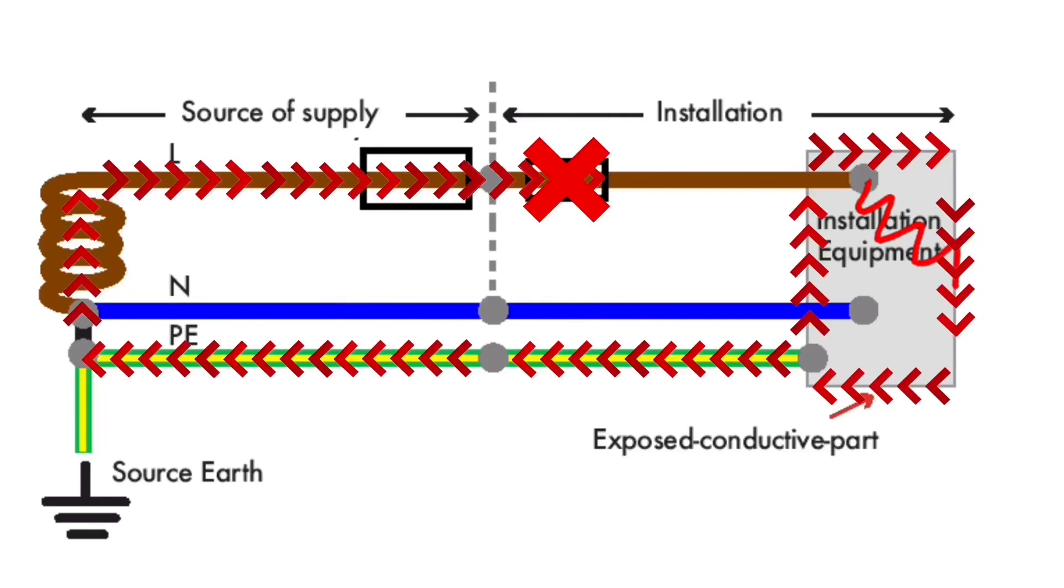We looked at two maximum times for disconnection: either a maximum time of 5 seconds or a maximum time of 0.4 seconds. I have described to you the earth fault loop path for an installation connected to a TNS earthing arrangement.